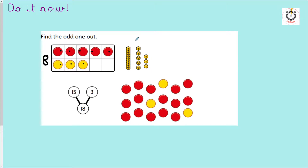Let's count the Dienes. Ten, eleven, twelve, thirteen, fourteen, fifteen, sixteen, seventeen, eighteen — eighteen Dienes. And it says fifteen and three makes the number eighteen.